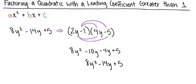When we combine like terms and simplify, we get 8y squared minus 14y plus 5, which is the same as our original quadratic expression that was given. This tells us that we've done our factorization correctly. We'll see you next time.